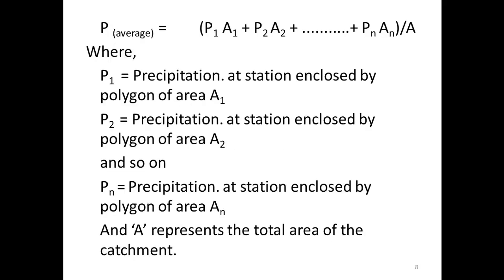Step 5: Calculate the average precipitation for the whole basin using the formula: P_avg = (P1·A1 + P2·A2 + ... + Pn·An) / A, where P1, P2, ..., Pn are the precipitation values at each station, A1, A2, ..., An are the respective polygon areas enclosing each station, and A is the total area of the catchment.